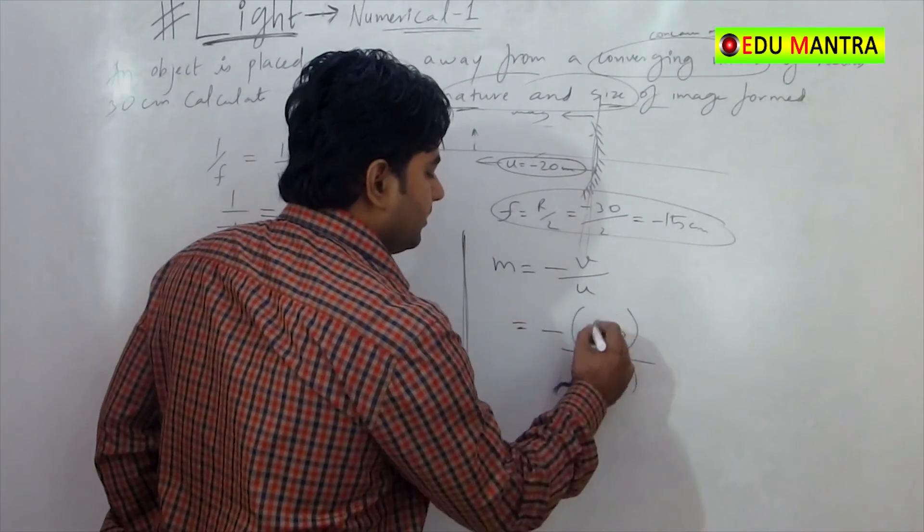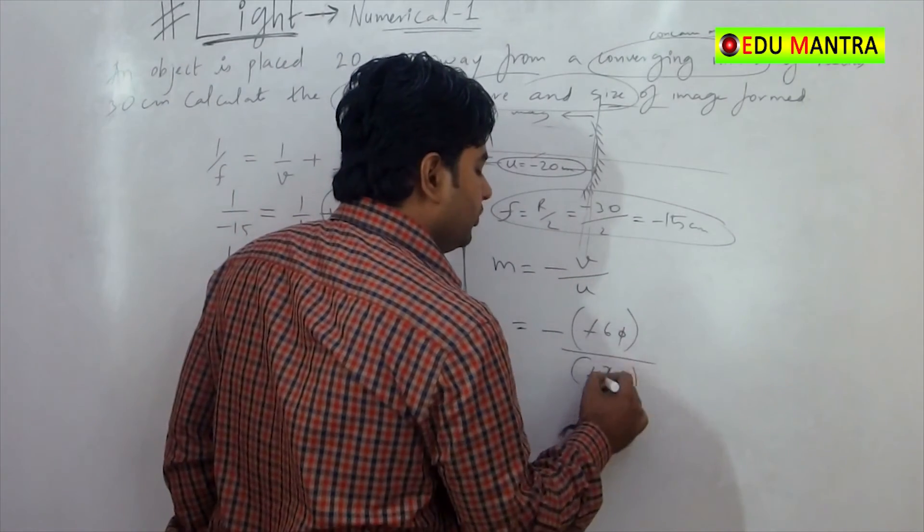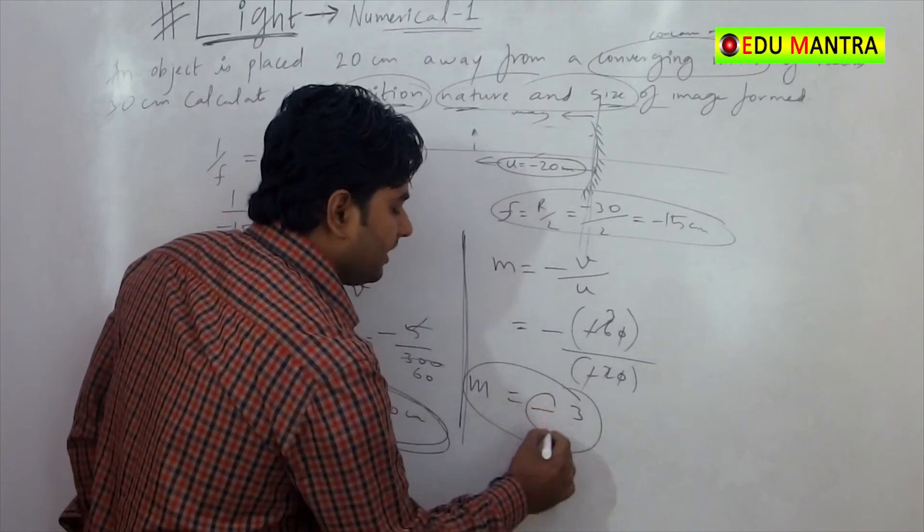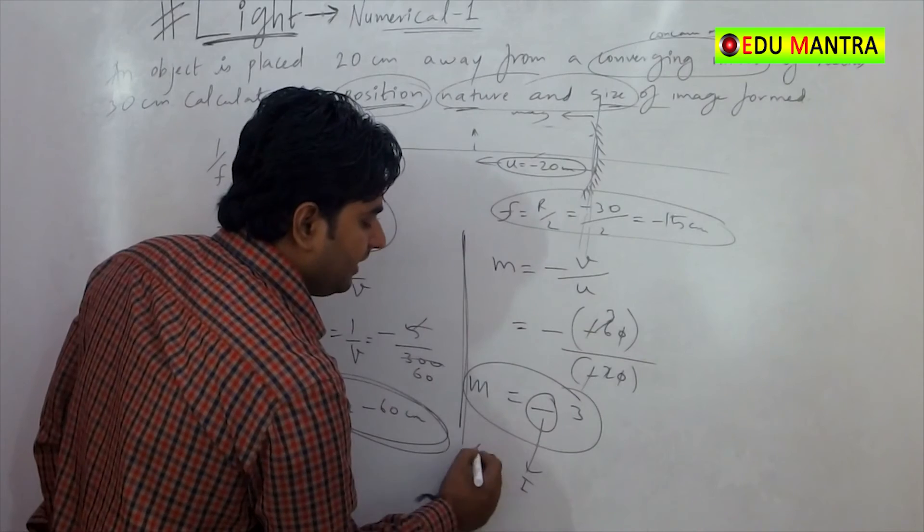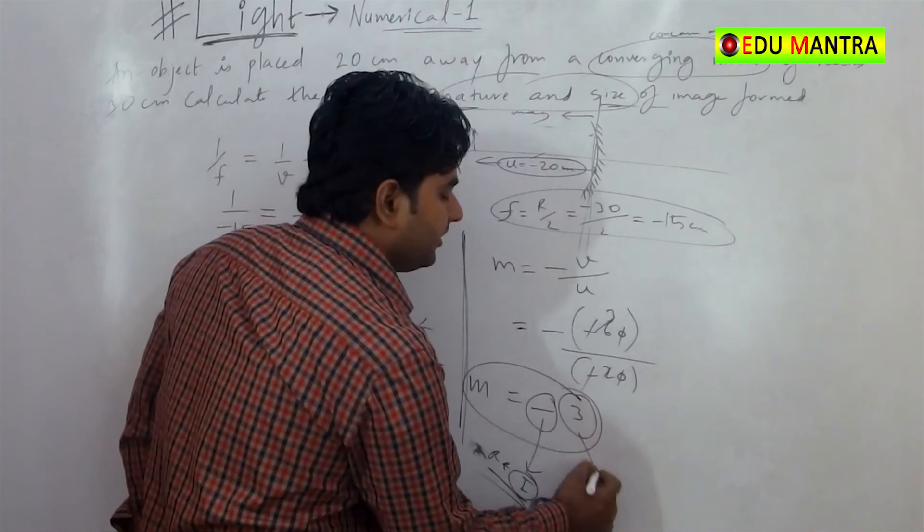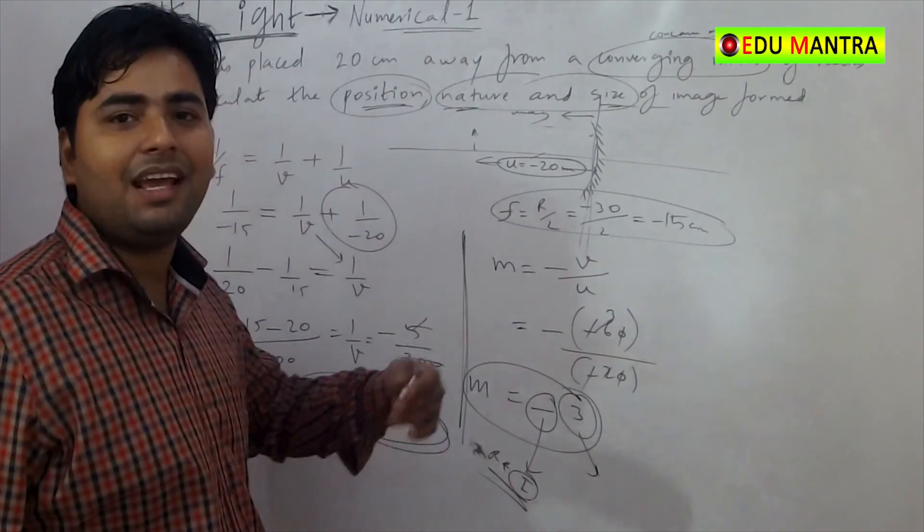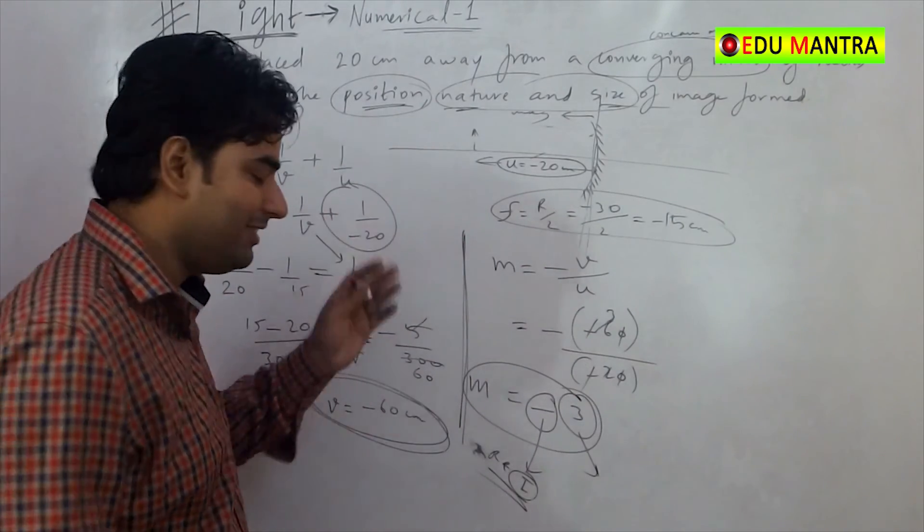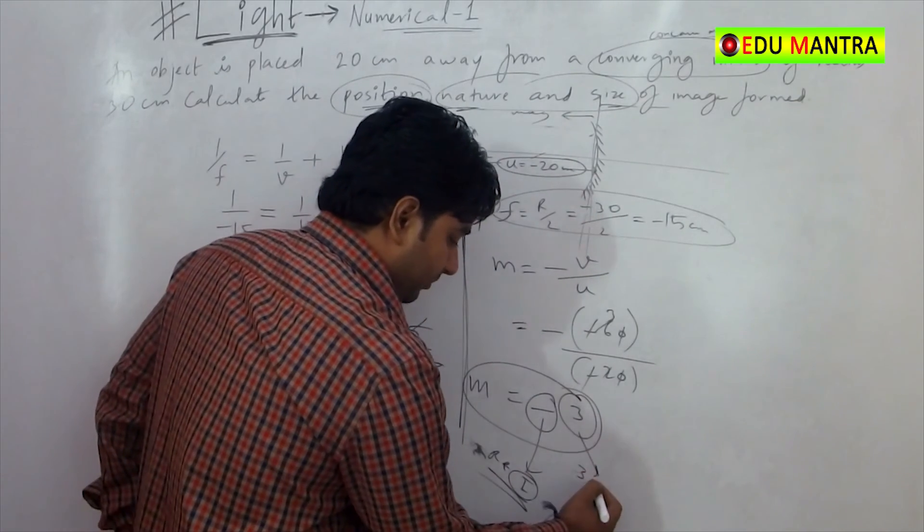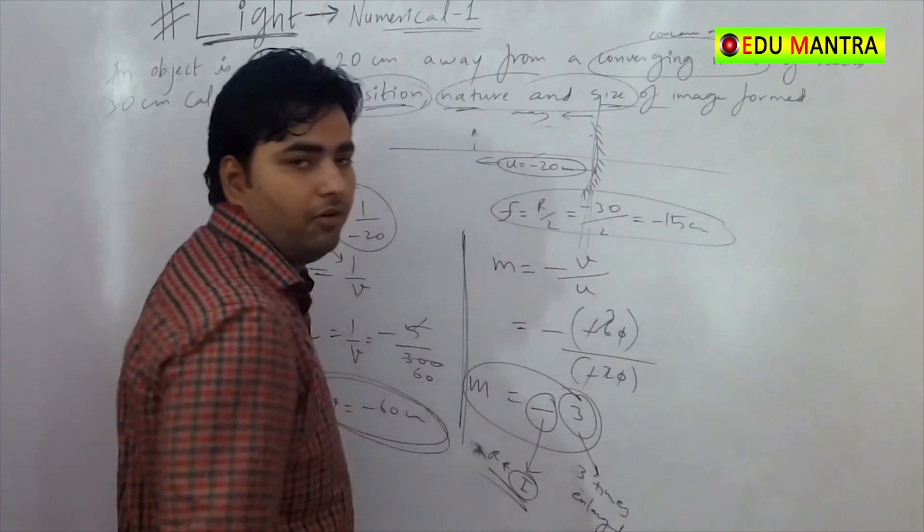And u is minus 20. Cancel out, minus minus becomes plus. 60 by 20 is 3. So magnification is minus 3, which means inverted, real, and 3 is greater than 1, which means enlarged. So this is 3 times enlarged image.